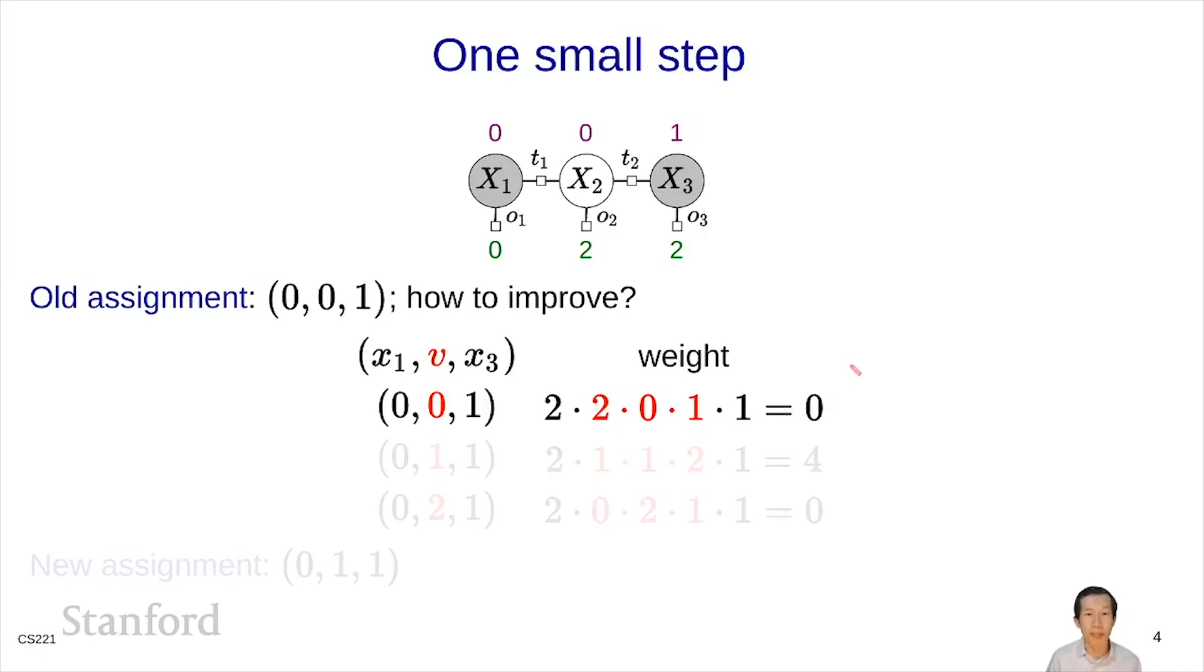How can we improve? Let's try to reassign x2 to something else. Let's try to assign it to some v. We can set v equals 0, 1, or 2, and for each of these alternate assignments we can compute its weight. And then we simply take the assignment with the best weight. In this case it's this one which sets x2 to be 1. So then we end up with a new assignment which is better than the old one.